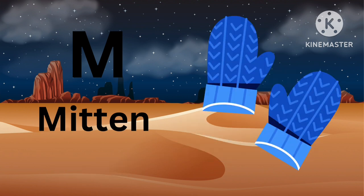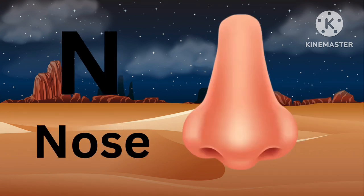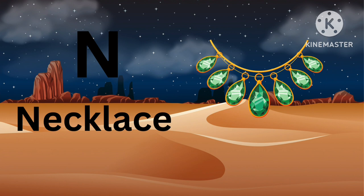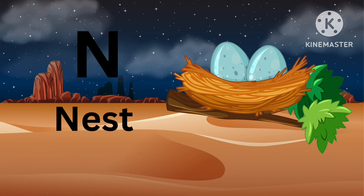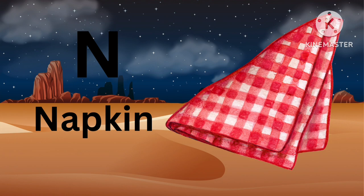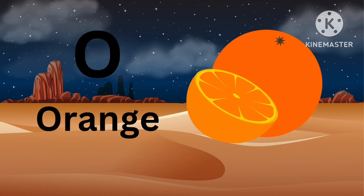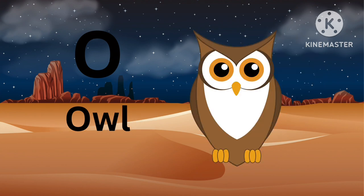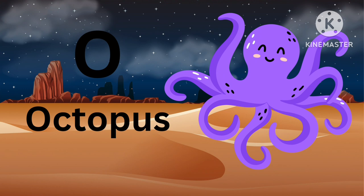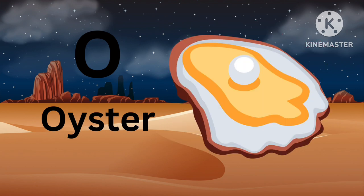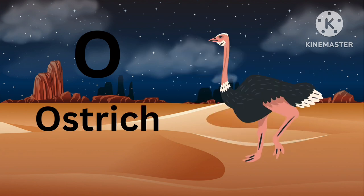M for Mitten. N for Nose, N for Nuts, N for Necklace, N for Napkin, N for Net. O for Orange, O for Owl, O for Octopus, O for Onion, O for Oyster, O for Ostrich.